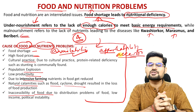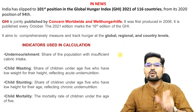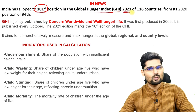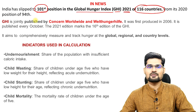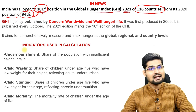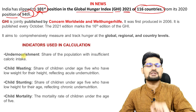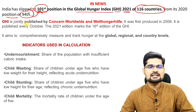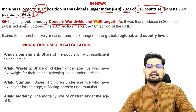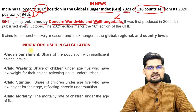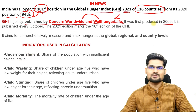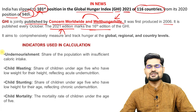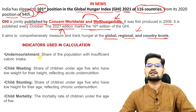Here we are talking about nutritional issues as well, not just about food. India has slipped to 101st position in the Global Hunger Index (GHI) in 2021 out of 116 countries, from its 2020 position of 94th. Understand — this is not just about losing ranks; it means we are not doing well in some sectors. GHI is jointly published by Concern Worldwide and Welthungerhilfe, first published in 2006. This is its 16th edition, covering global, regional, and country levels.